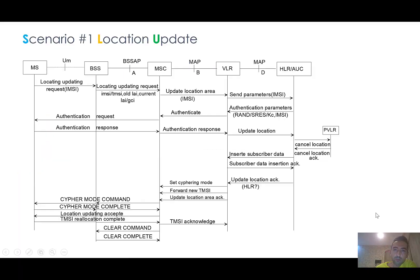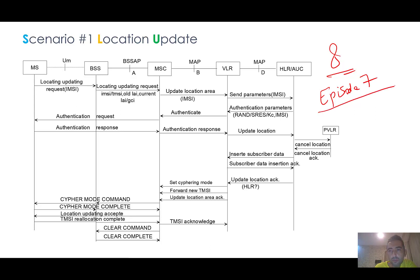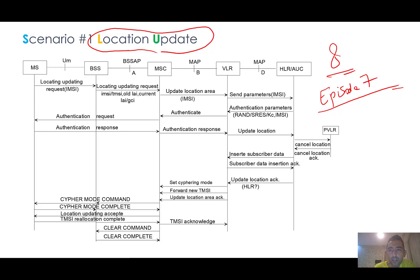Hello everyone and welcome to Episode 8 of the Mobile Networks Overview course. In Episode 7 we talked about CS core services, and I promised that in Episode 8 we would talk about the basic scenarios of CS core. Right now we want to talk about the location update scenario, which is the most basic and also the most important scenario in mobile networks, because you need to update and register in the network so you can have service.